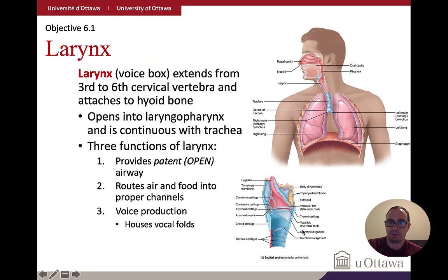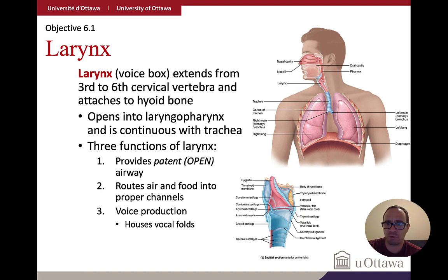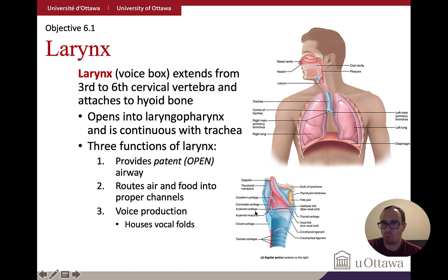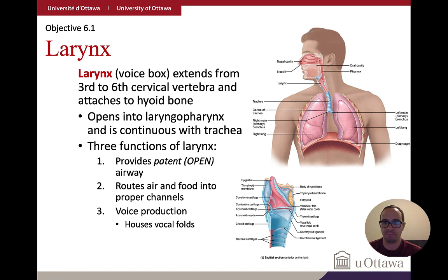The larynx is rich in cartilage, with rings that extend down to the tracheal cartilages. Key structures include the epiglottis, which reroutes food to the digestive system and prevents it from entering the respiratory system. You don't need to know all the cartilage names, but note the thyroid cartilage, which makes up the Adam's apple.